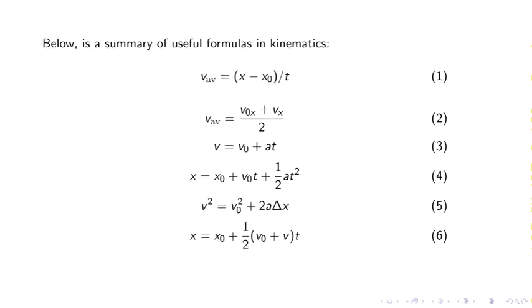Below is a summary of the useful formulas in kinematics. Equation 1 is the formula for the average velocity between two points. The second equation is the average velocity from the initial and final velocities. The third equation relates the velocity to the acceleration and time. Equation 4 relates the position to the time and the initial velocity with acceleration and the initial position.